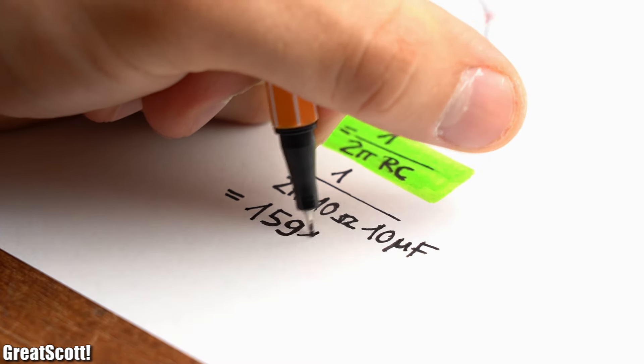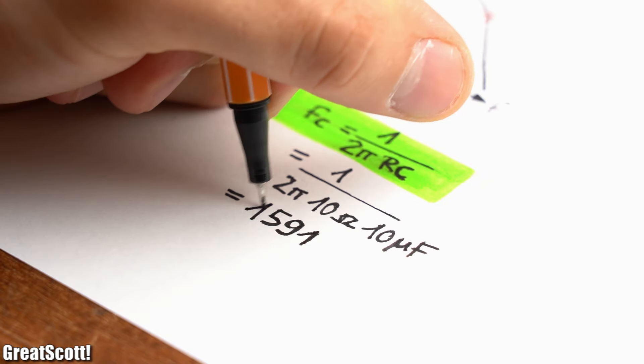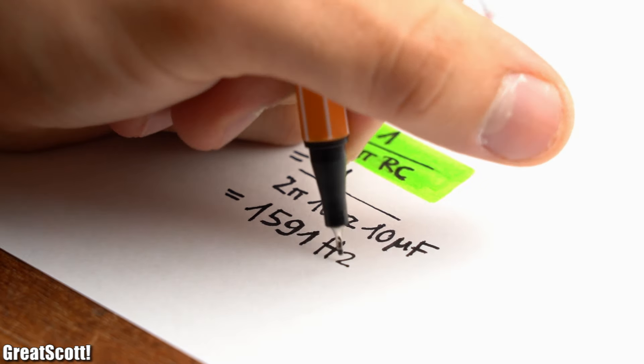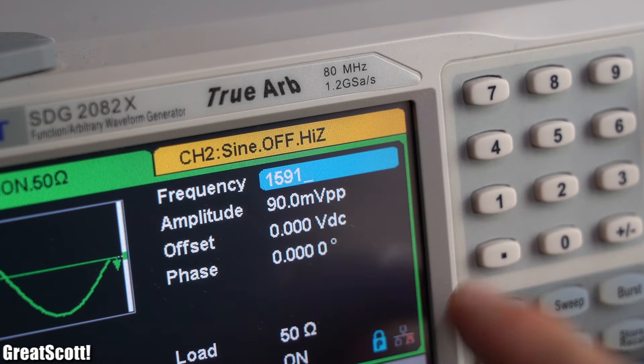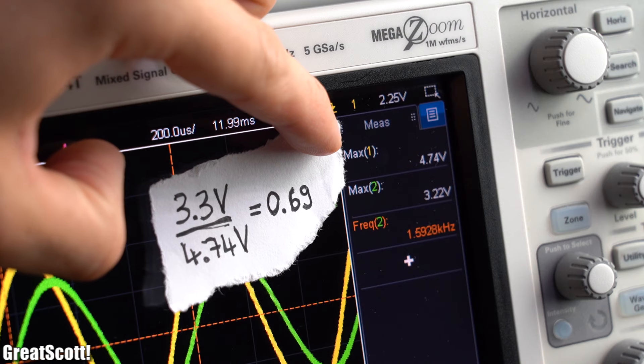So with our previous example values, we would get a cutoff frequency of 1591 Hz, which by adjusting the function generator to this frequency seems to be correct.